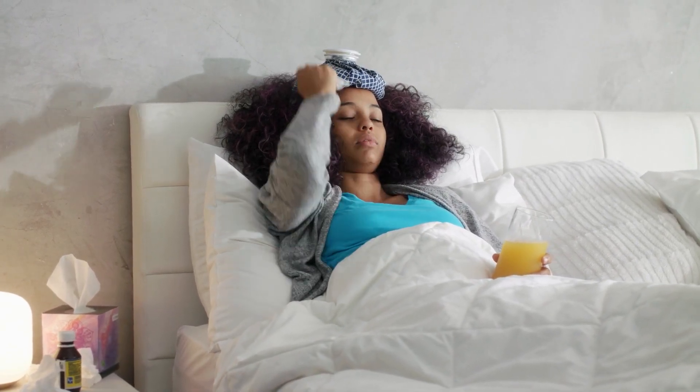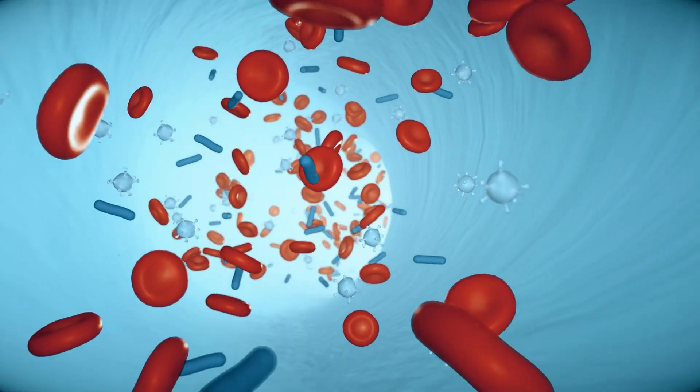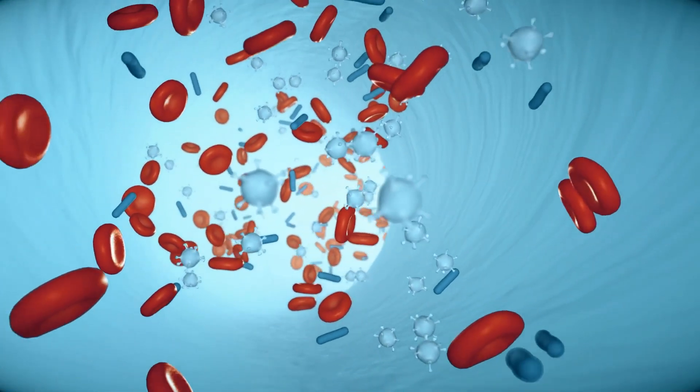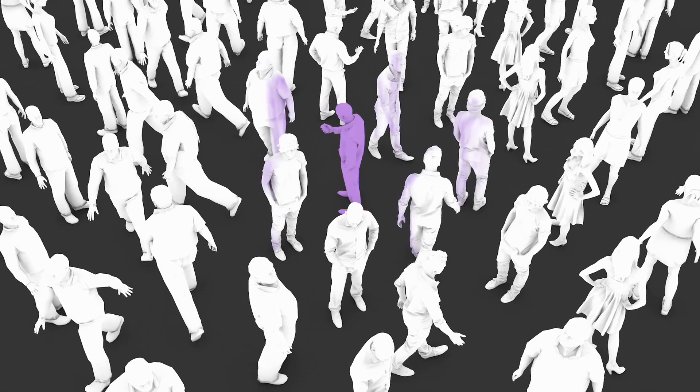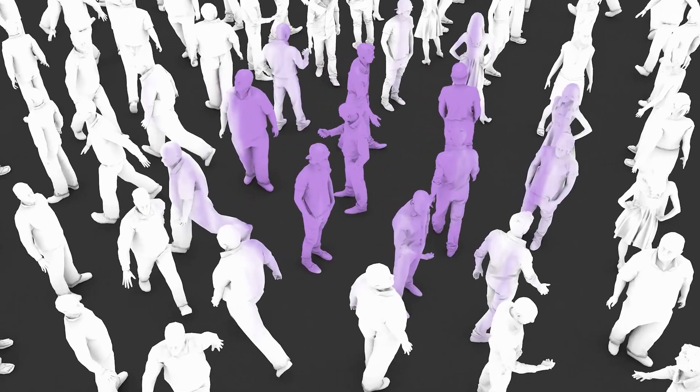The immune system may learn something from one virus to help combat another related virus. But whatever is gained won't make the body completely protected against the related virus. That mechanism may not even work in everyone, especially those with chronic conditions.